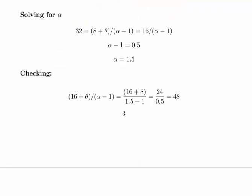Solving for alpha. Just sub in the value of theta and then solve. Using one of them here we replace theta with 8, so 8 plus 8 divided by alpha minus 1 should give us 32.